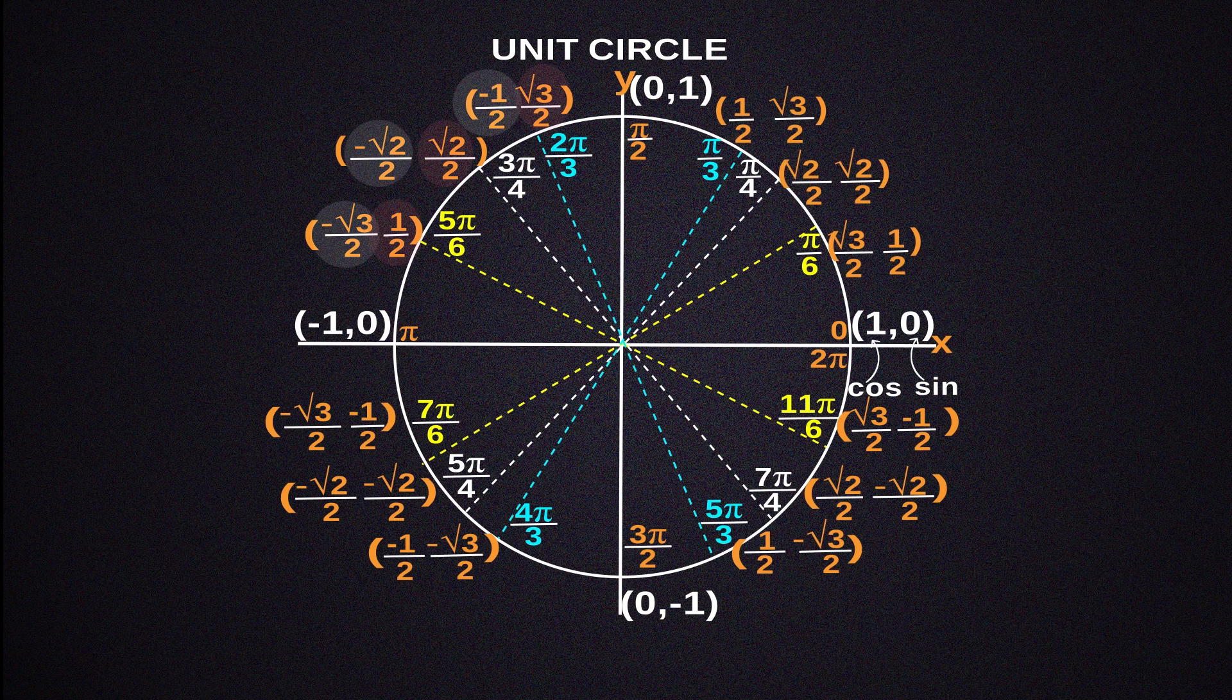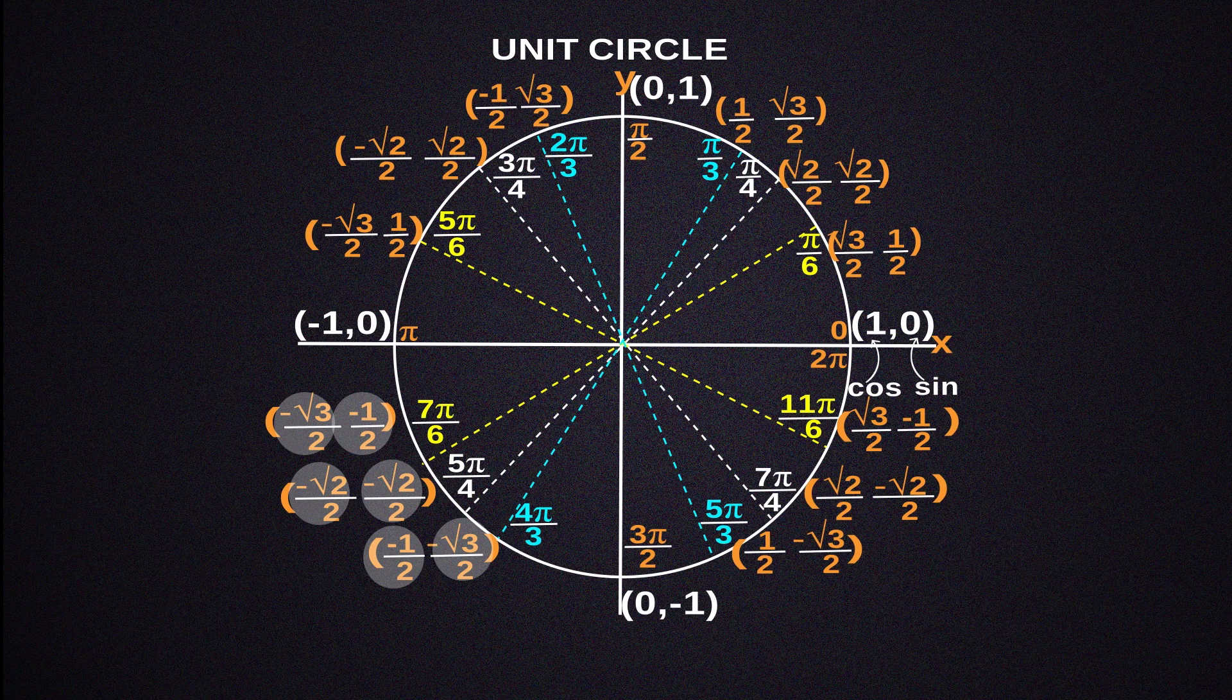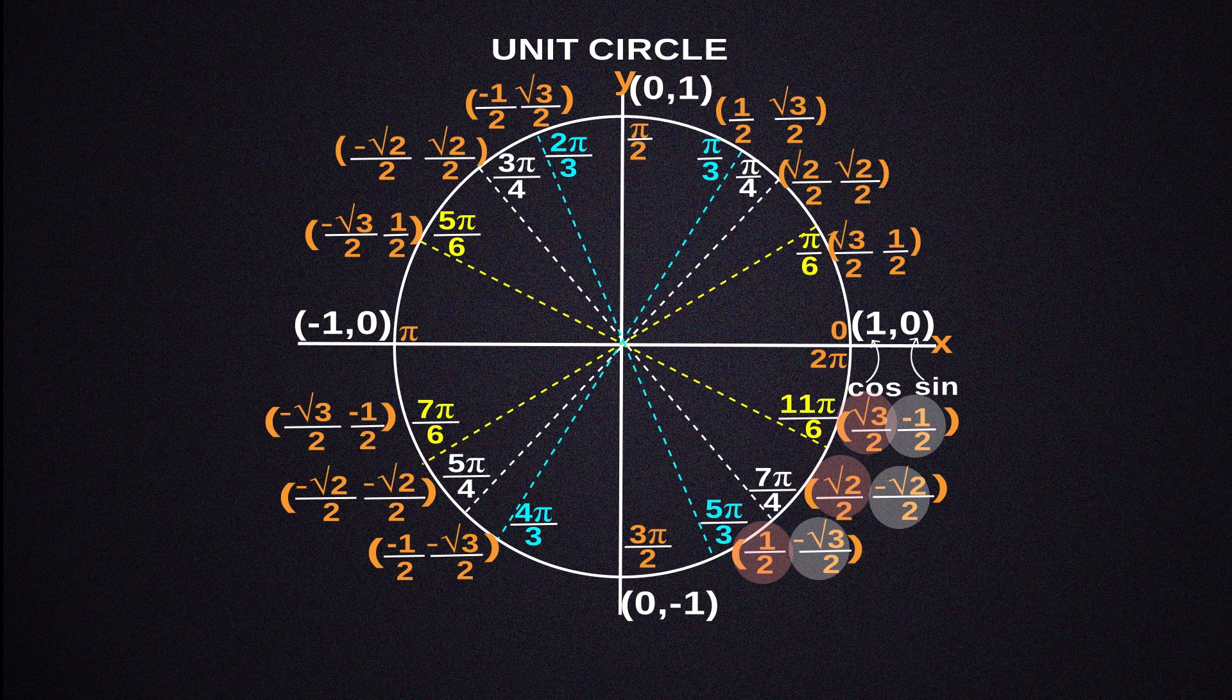All of the x and y coordinates in the first quadrant will be positive. The y coordinates will be positive and the x coordinates will be negative in the second quadrant. The x and y coordinates in the third quadrant will be both negative. The x coordinates will be positive and the y coordinates will be negative in the fourth quadrant.